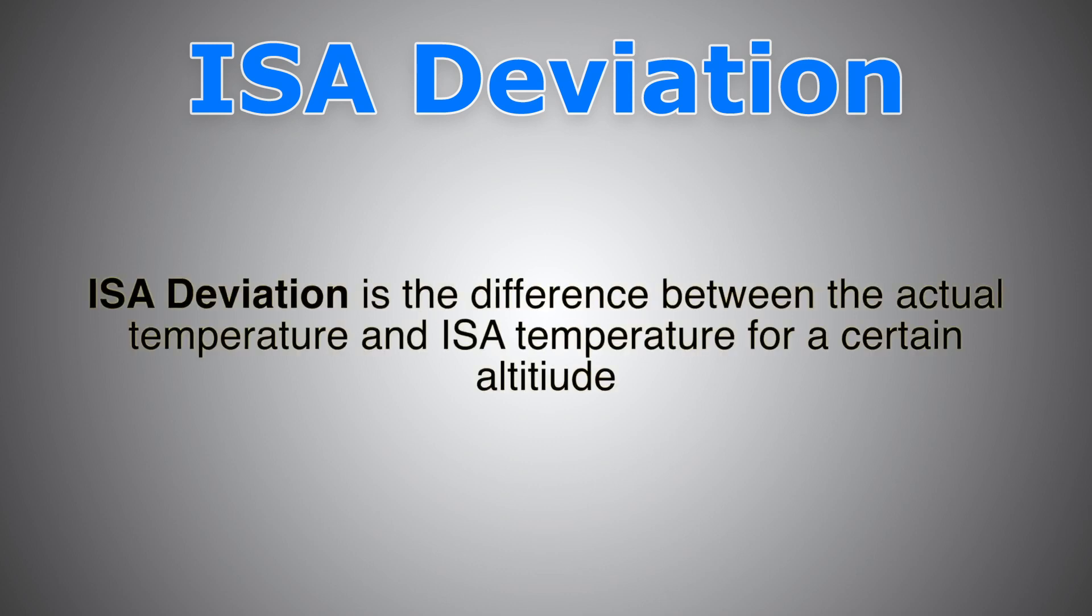So like we said, ISA temperature deviation is the difference between the actual temperature and the ISA temperature for a certain altitude. So for every 11 degrees the colder temperature varies from standard, there is a 4% lower error in the altitude compared to that indicated in the altimeter.